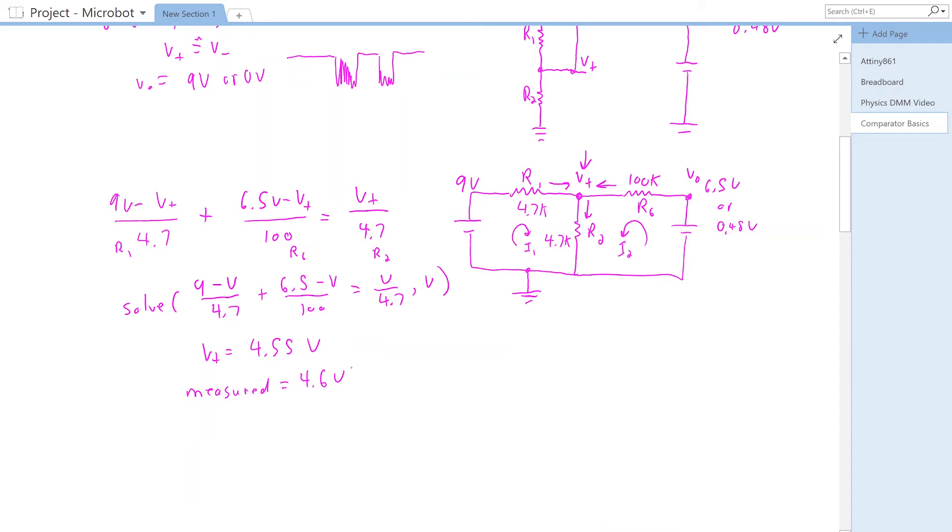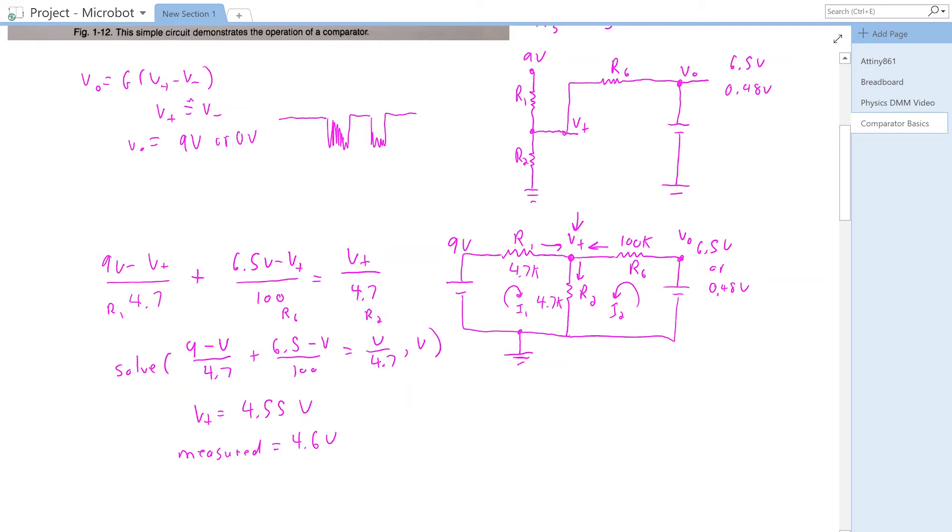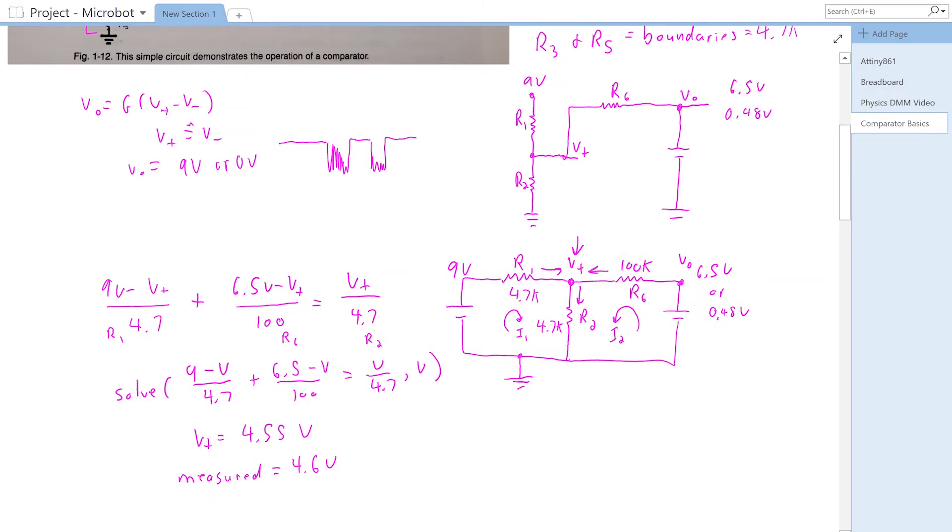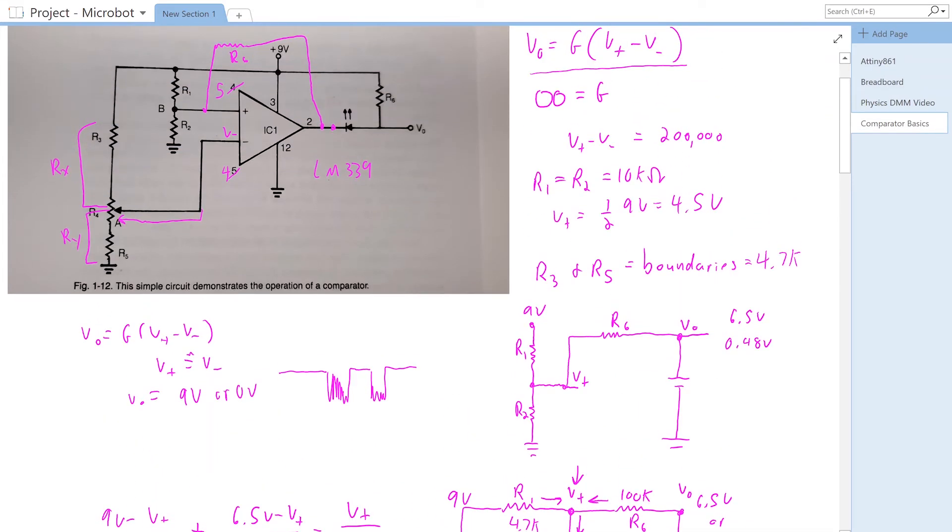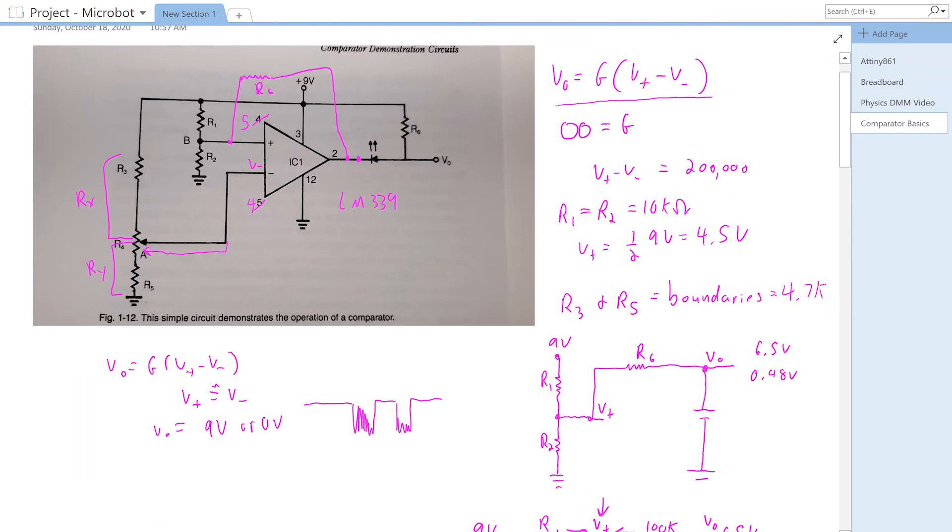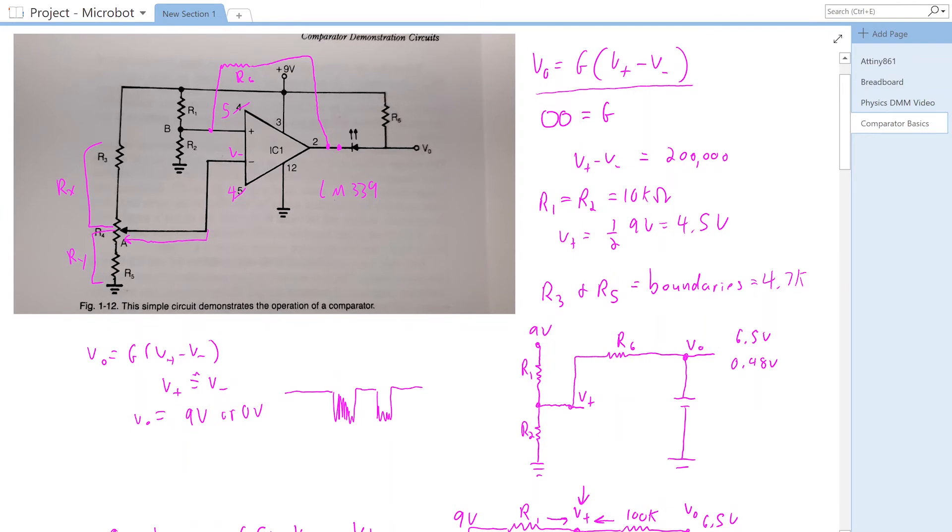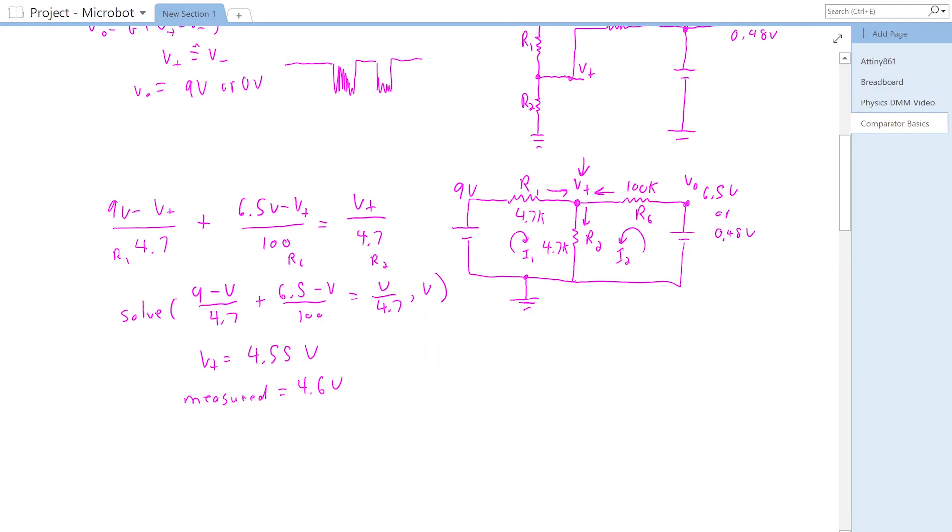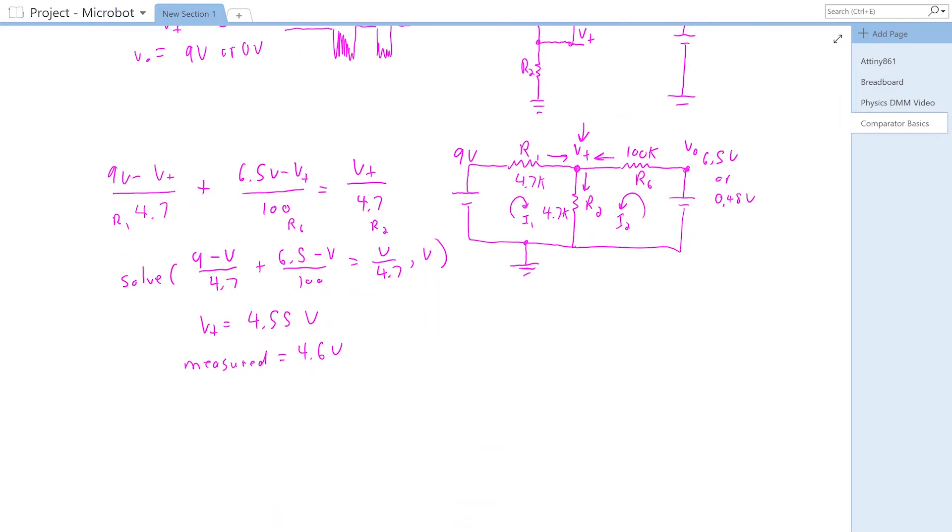Basically what happens is if I didn't have the 100K, my V plus would be 4.5 volts. But with the comparator putting out 6.5 volts, at this point it's 6.5 volts. It's not 9 volts because we've got a voltage drop across the diode of 2.5 volts, and then we've got the rest as a 6.5 volt drop across that.